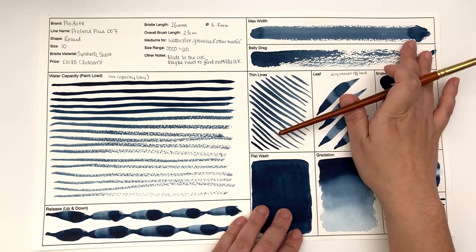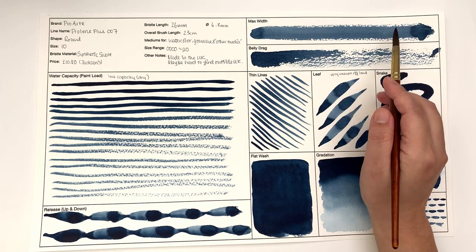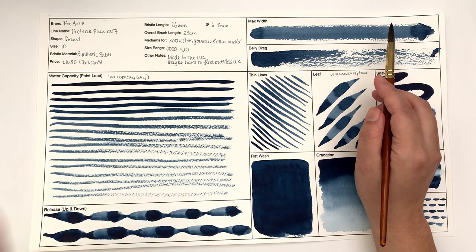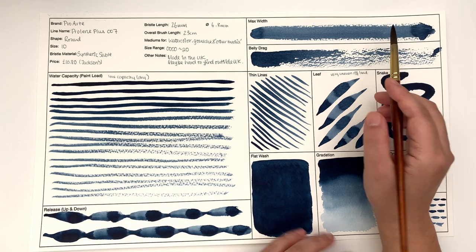In terms of max width, it's pretty wide, but you can see the edge is dry and that's a sign that it's more closer to a drier brush than a really soaked wet brush.